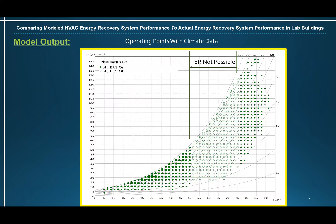Another portion of the output from the previous slide. This graph shows the 8760 operating hours, the climate data for the city the building is located in, and whether the energy recovery system is running. The x-axis is outside air temperature. The left y-axis is absolute humidity in grains per pound, and the right y-axis is percent relative humidity. This graph is for Pittsburgh, Pennsylvania. The green circles that are filled in show when the energy recovery system is running, and the unfilled green circles show when it is not running.